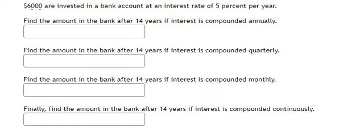We have $6,000 invested in a bank account at an interest rate of 5% per year. Question number 1: find the amount in the bank after 14 years if interest is compounded annually. So we start with 6,000.